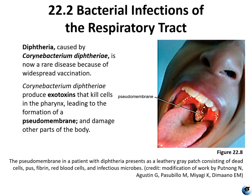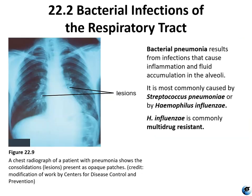Bacterial pneumonia results from infections of Streptococcus pneumoniae usually, or Hemophilus influenzae. You can even have bacterial pneumonia caused by Klebsiella pneumoniae, among several other species. This causes inflammation and fluid accumulation in the alveolae of the lungs. This figure shows a chest radiograph with lesions on the lungs and fluid accumulation.